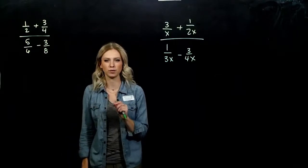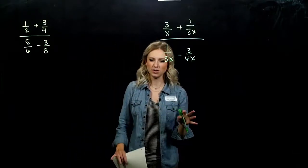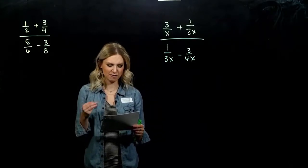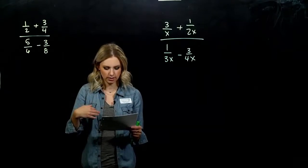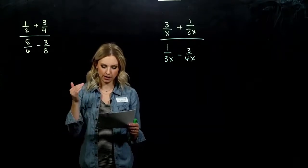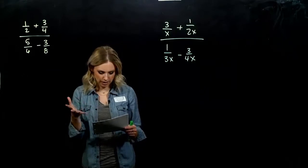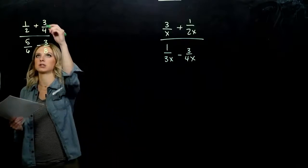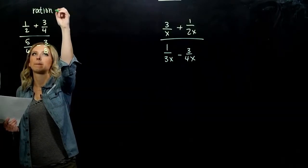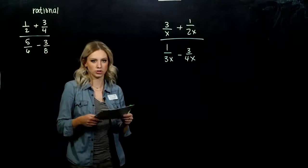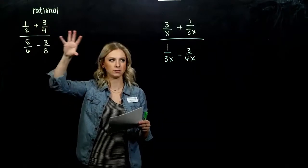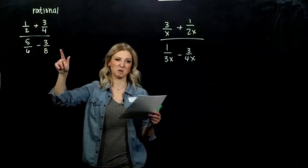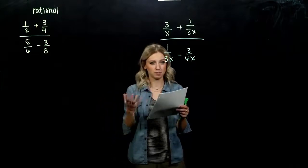We want to look at one more aspect of rational expressions — what if I have a more complex version of those expressions? Maybe I have a mix of fractions inside of fractions. That actually is a complex rational expression: a rational expression that has one or more rational expressions inside of it. So just fractions inside of a big fraction. We need to be able to simplify these, because these are really ugly. We want a nicer form, if possible.